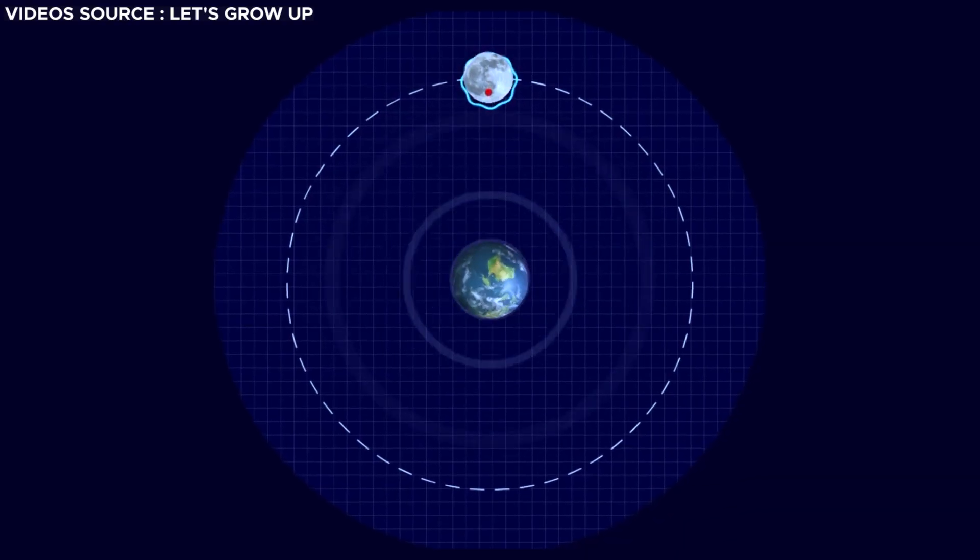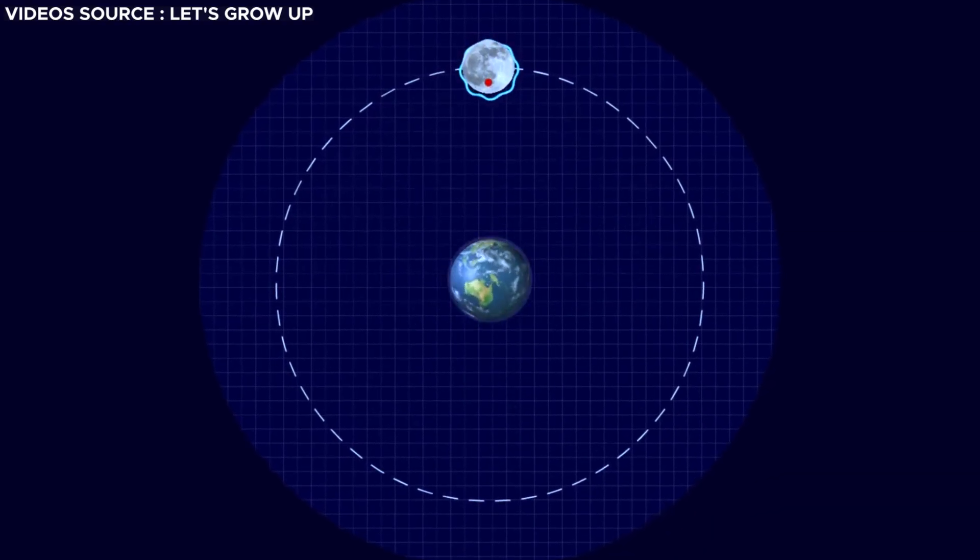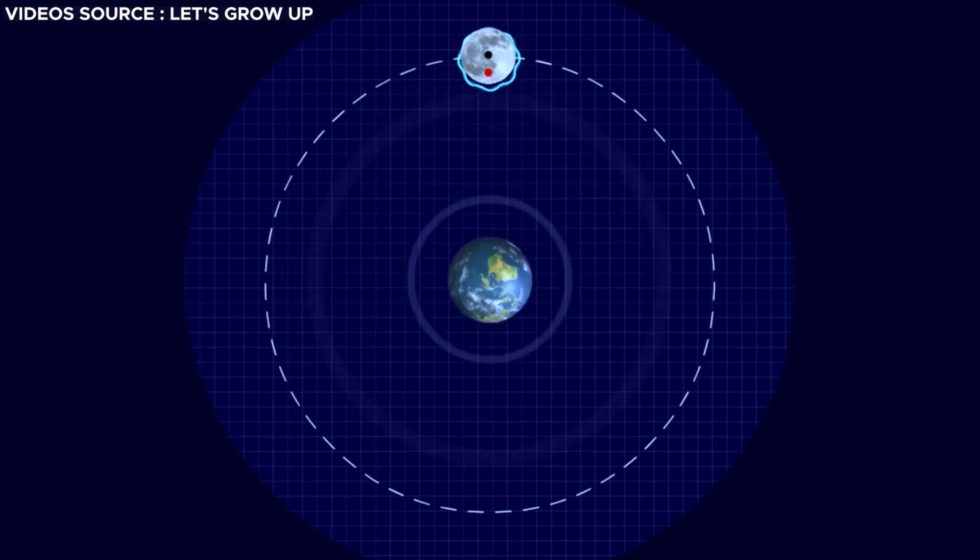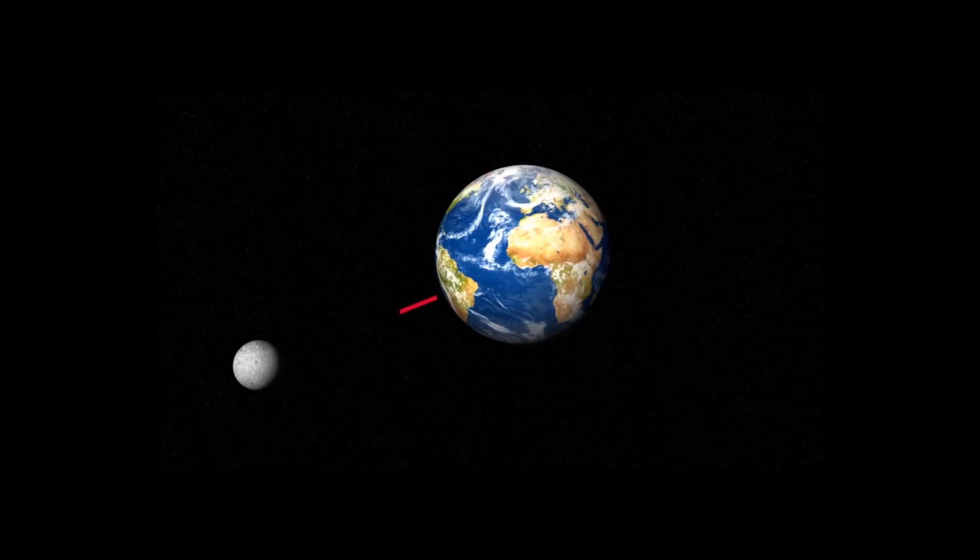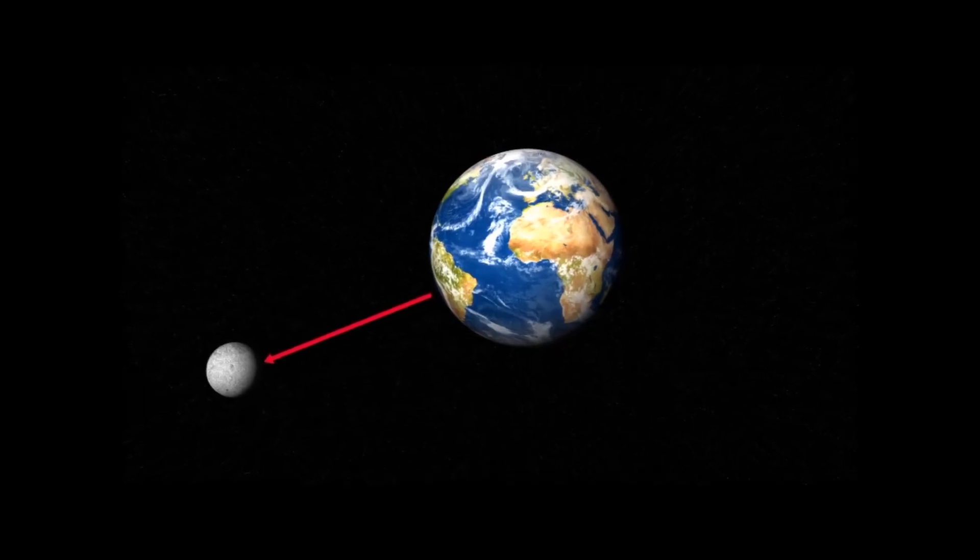Yet, the prospect of the moon escaping Earth's gravitational influence is exceptionally improbable in the foreseeable future. Presently, the moon is gradually distancing itself from Earth at a pace of approximately 3.8 centimeters per year.